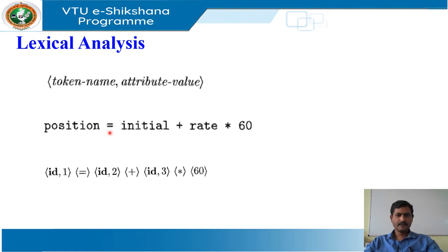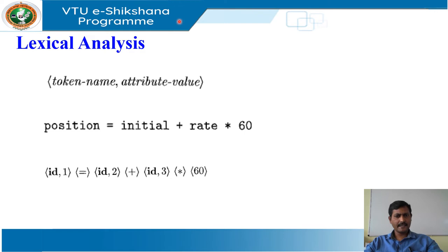The assignment symbol equal-to is a lexeme that is mapped into the token equal-to. Since this token needs no attribute value, we have omitted the second component. We could have used any abstract symbol such as 'assign' for the token name, but for notational convenience, we have chosen to use the lexeme itself as the name of the abstract symbol.